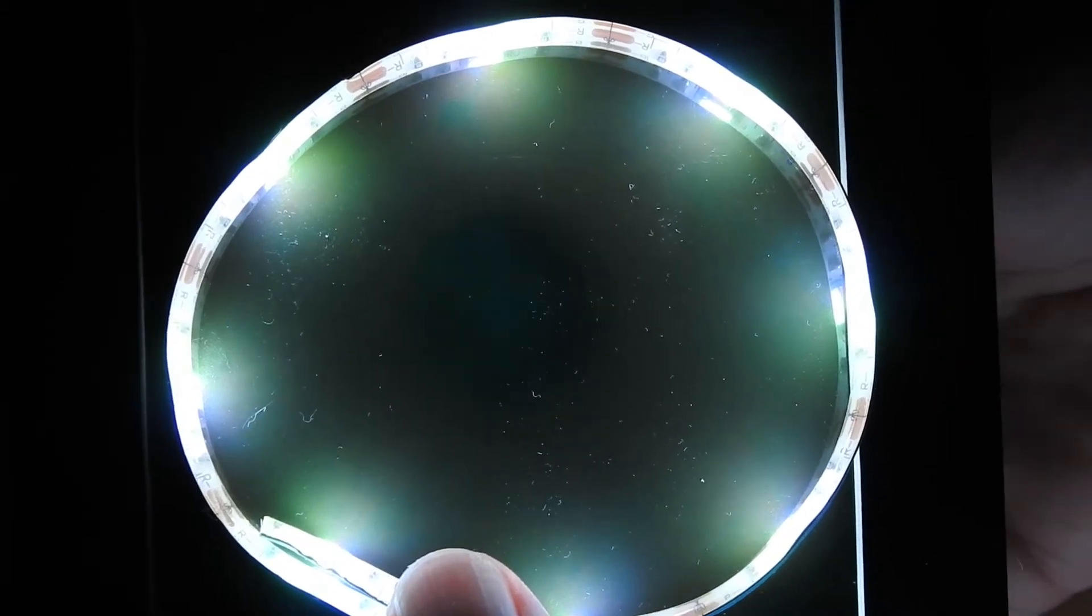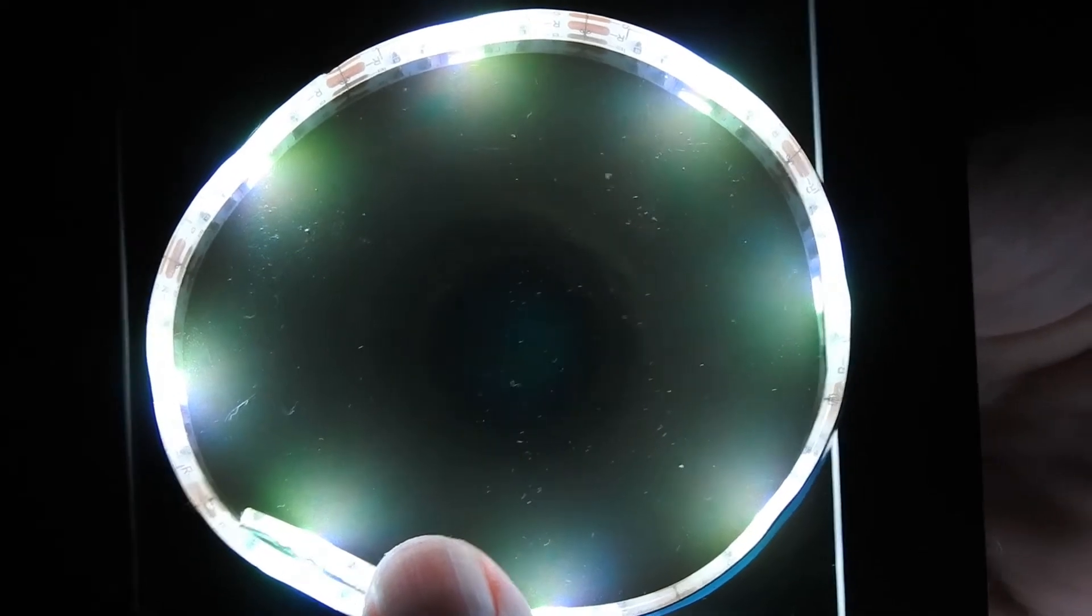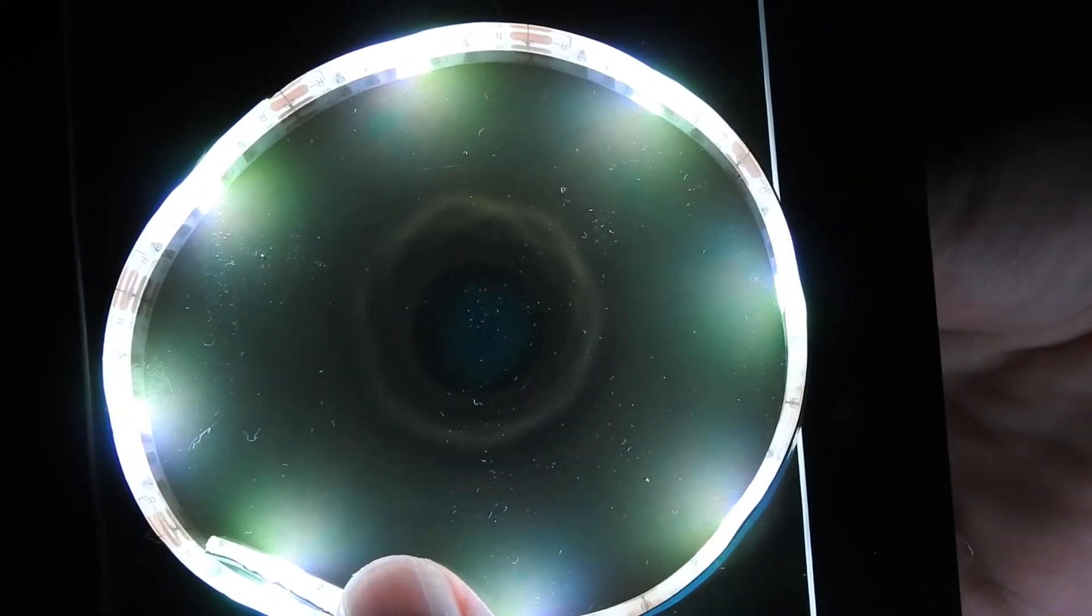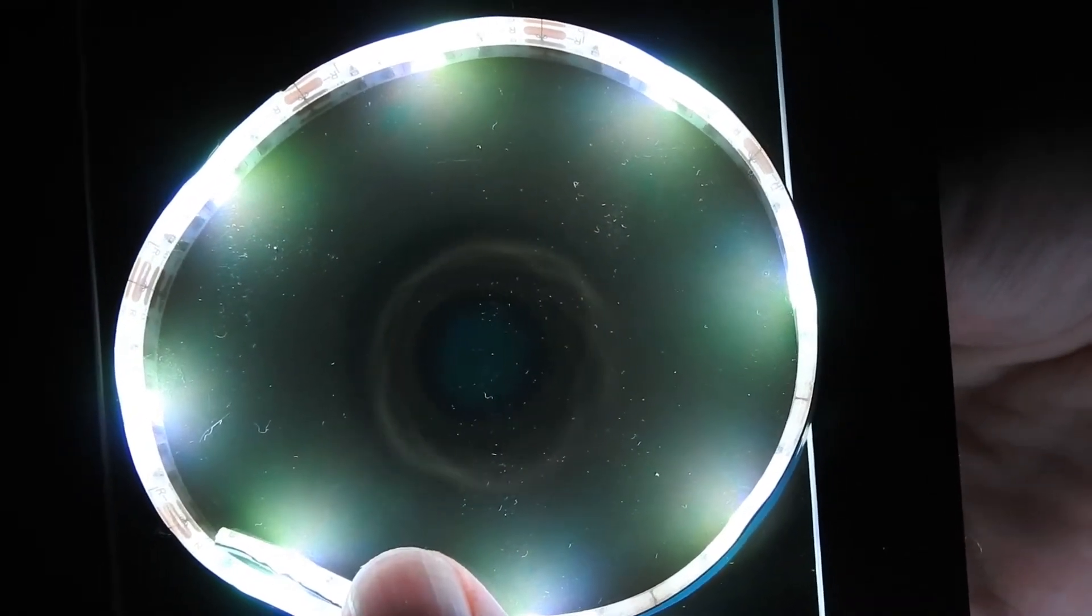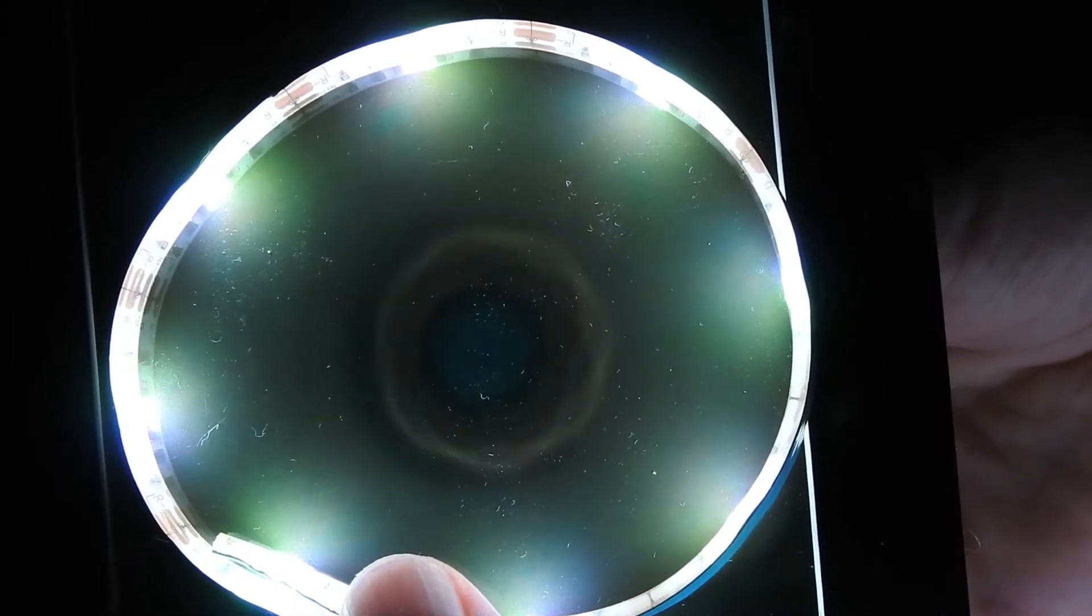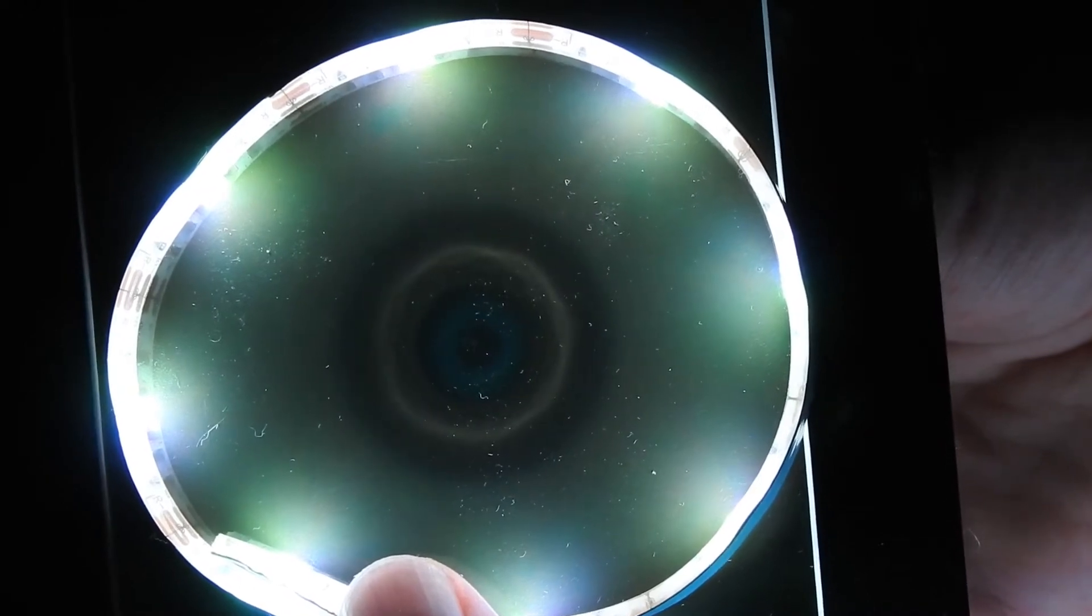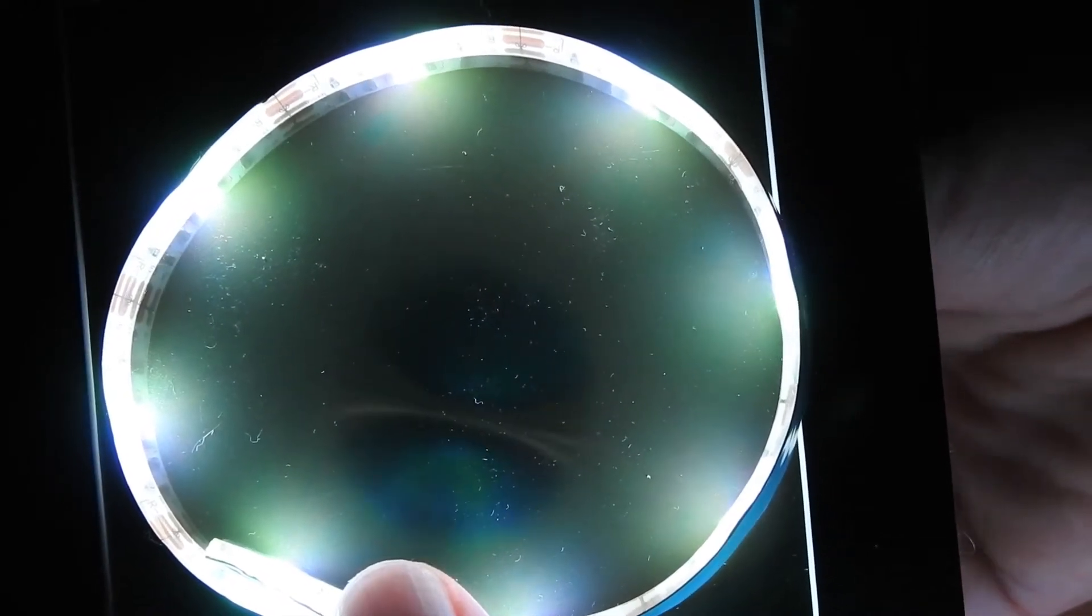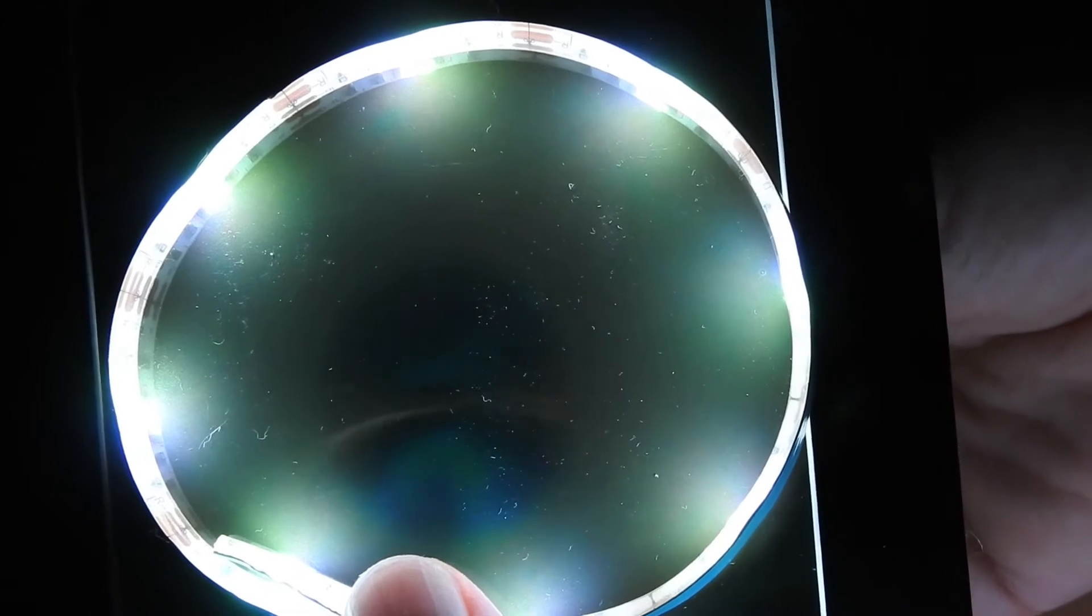So let's start. This is the ring magnet underneath the viewing film. And I will just turn it a bit. This is viewed from above. And this is what it looks like from the side.